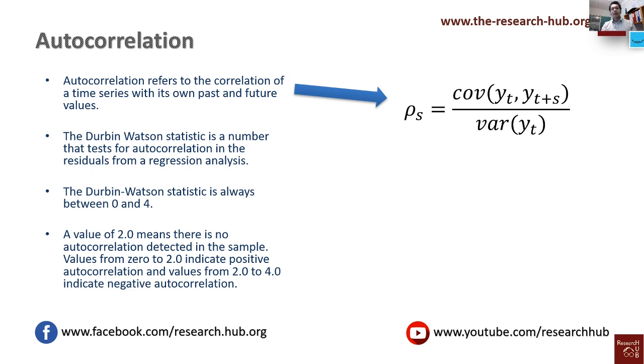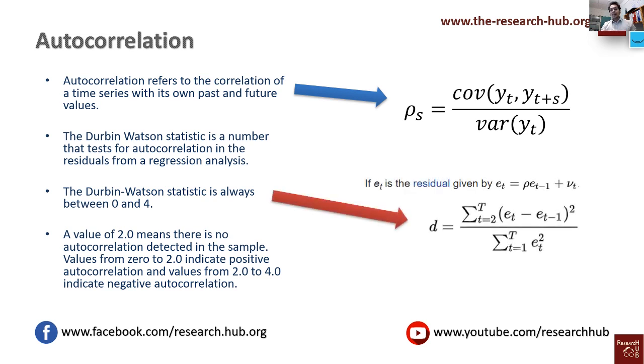When we talk about Durbin-Watson test for autocorrelation in residual of a regression, if the residual is given by e_t equals ρ multiplied with e_{t-1} plus v_t, then the Durbin-Watson test statistic d equals this form. Here e_t is the residual at time t. If you do the calculation using this, you will get a value of Durbin-Watson test which will be always between 0 to 4.